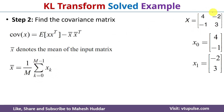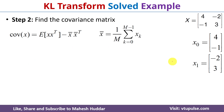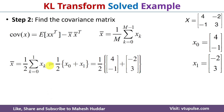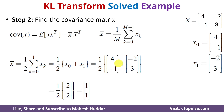In the given input matrix we have two vectors, so m equals 2. Replacing m with 2, we get x̄ equal to 1/2 multiplied with the summation of x_k where k goes from 0 to 1. Expanding this equation, in the first iteration we replace k with 0 and in the second iteration we replace k with 1. Substituting the known values of x0 and x1, we get x̄ equal to the matrix [1, 1].